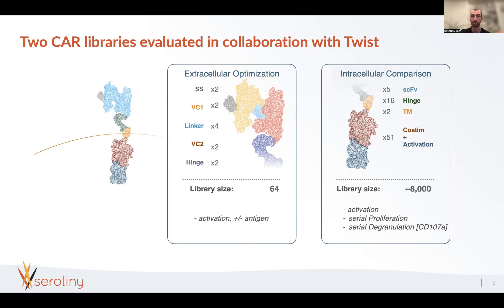The second library followed up on the first, taking the best binders from library one. This was a much larger library focused on the intracellular region of the CAR. We included the top-performing SCFVs, 16 different hinges, two transmembrane domains, and 51 co-stimulation and activation domain variants—including variations, truncations, and removals—producing a library of about 8,000 different receptors. This library was tested not just for activation but also in primary cells for proliferation and degranulation after serial stimulation.